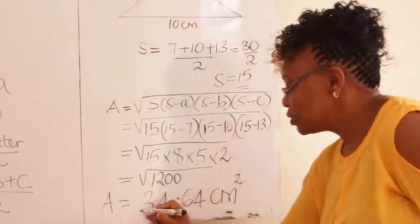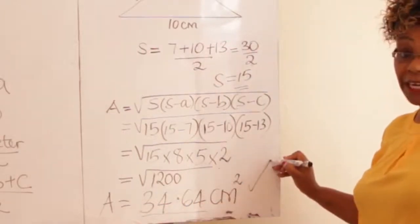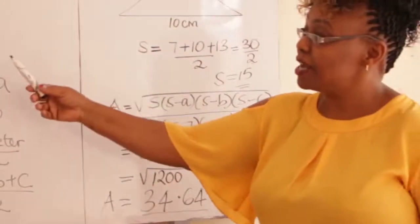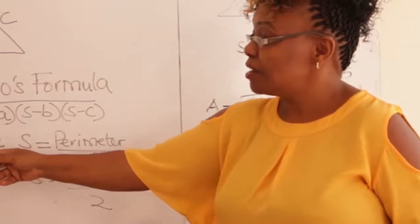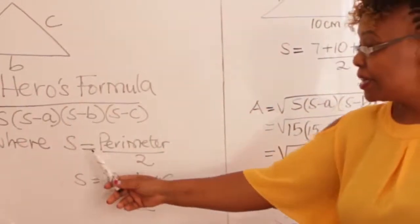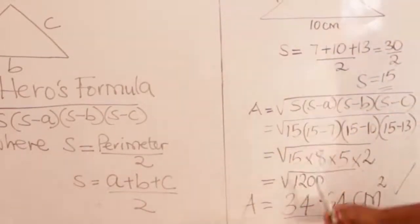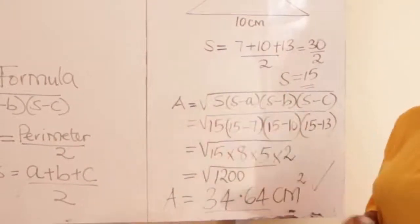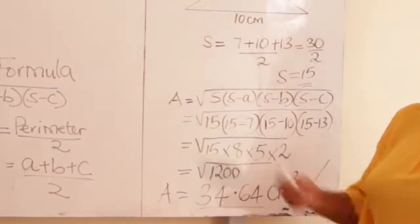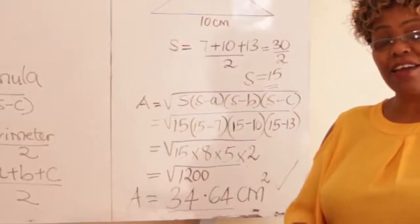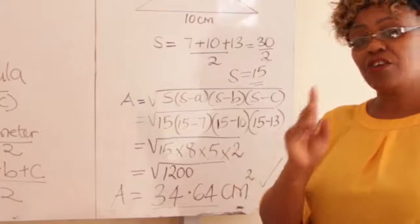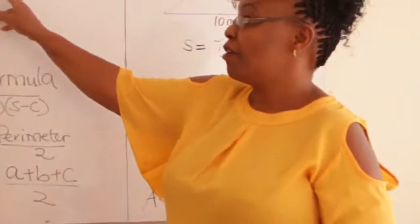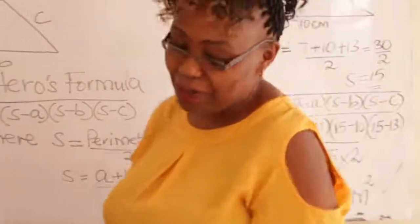Centimeters square, to the nearest two decimal places. Put the formula in mind, learner: when you are given three sides, this is Heron's formula, where S is got by perimeter over two. We have learned how to find area given two sides and an included angle, and also given three sides of the triangle. Thank you very much; practice using relevant books.